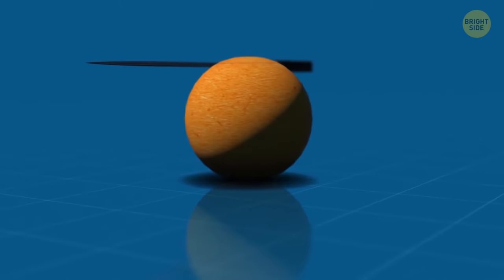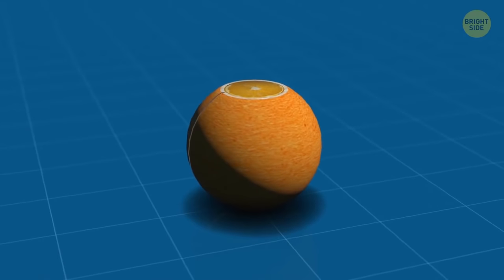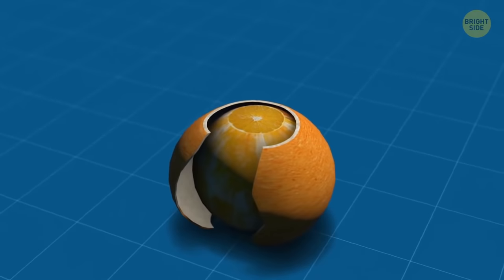If you don't feel like peeling an orange, cut it on top and bottom, make a slit on a side, and just pull it open.